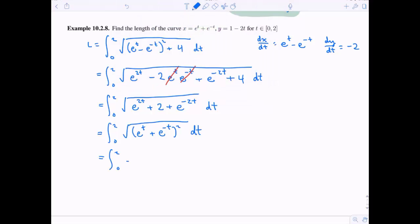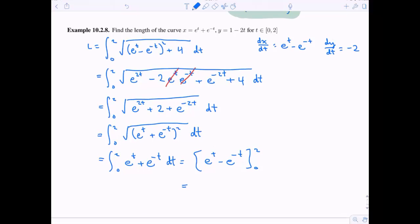So now this I can certainly integrate. So these things cancel, the square root. These are already positive values, so you don't need to worry about any absolute value or anything like this. Integrate. Evaluate from 0 to 2.